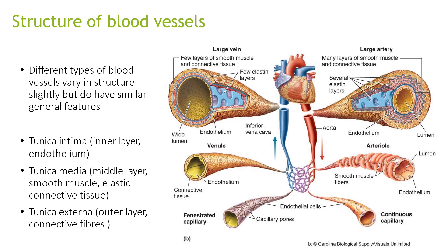The different types of blood vessels vary slightly but do have similar general features. They all have a tunica intima, a tunica media, and a tunica externa. The tunica intima is the inner layer of endothelium, the tunica media is the middle layer of smooth muscle and elastic connective tissue, and the tunica externa is the outer layer of connective fibres.